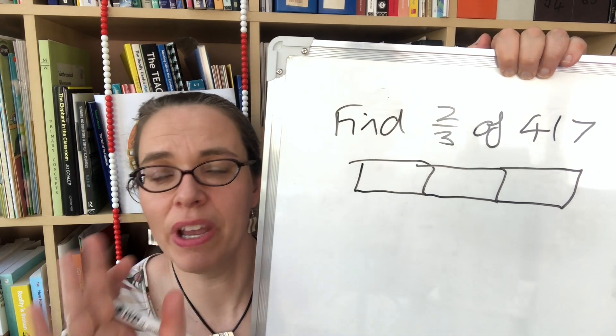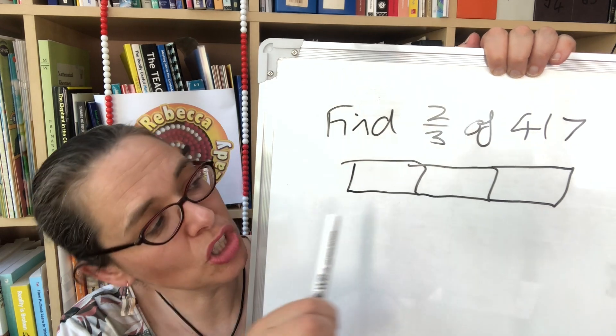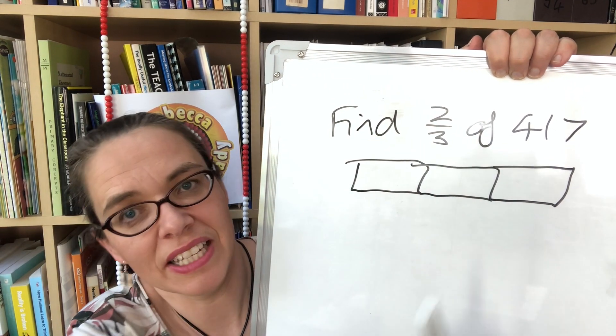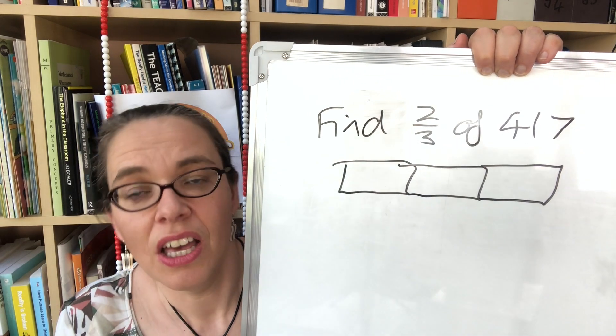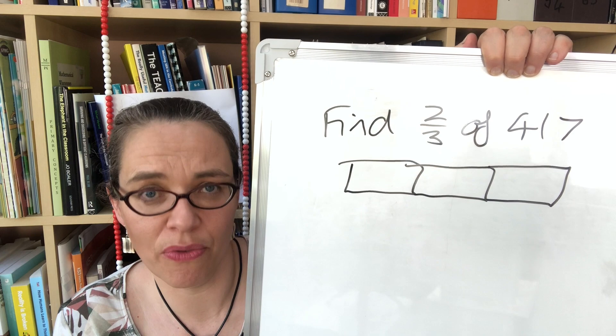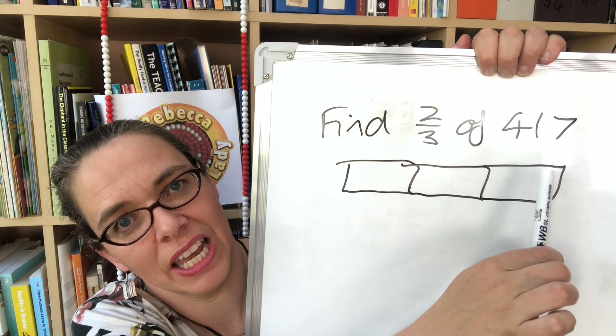And here we identify one of the problems children struggle with with division. Some children think division is counting groups, how many threes in 407. And if they only see that structure of division it's going to get in the way of them knowing what to do here. They need to know that division is sharing fairly.